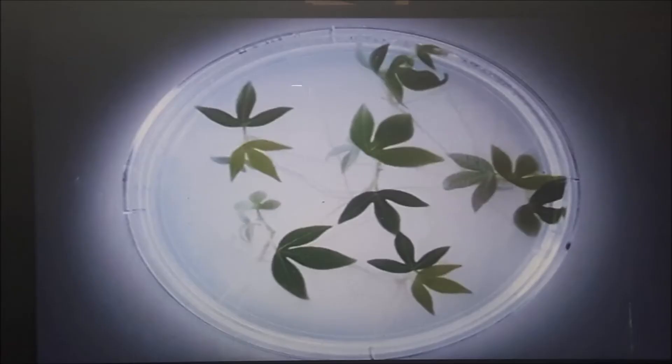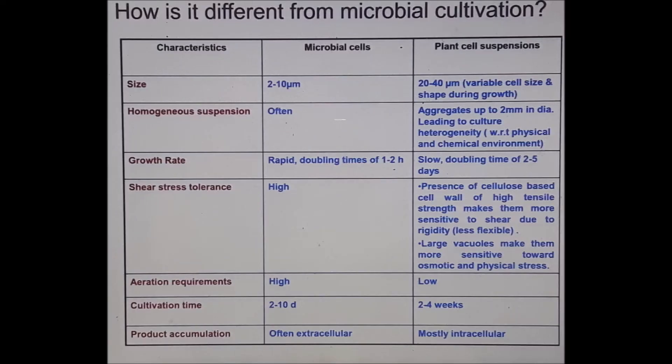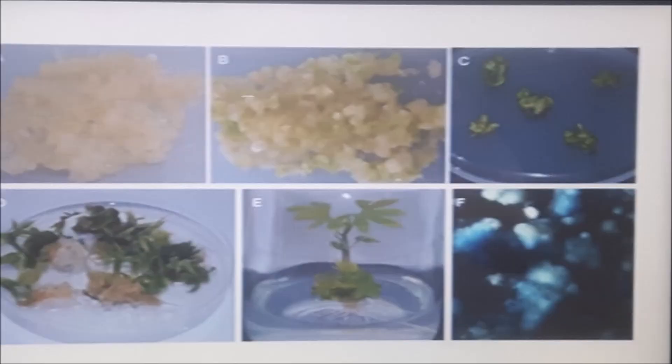Sterilisation is the key — if you don't get sterile, you're going to grow fungi and bacteria. Have a look here: cultivation time is two to ten days for microbe cells and two to four weeks for plant cells. So if you don't get the sterile right, the microbes are going to overpower it.